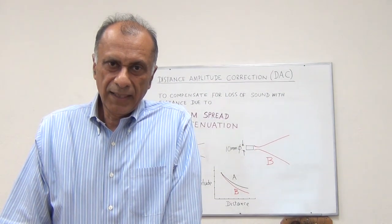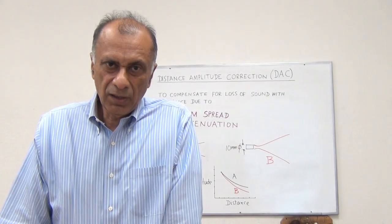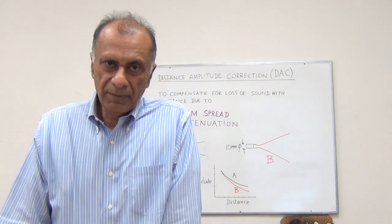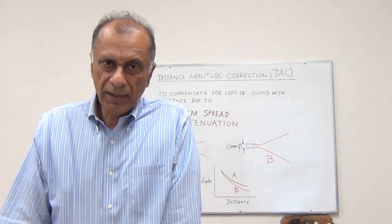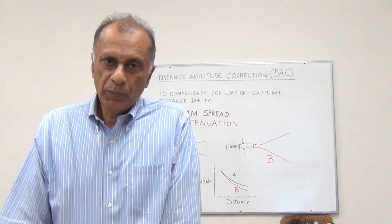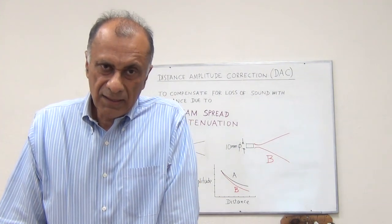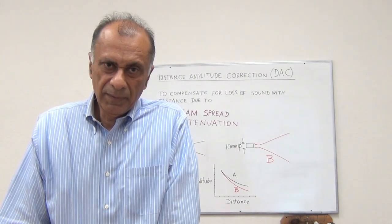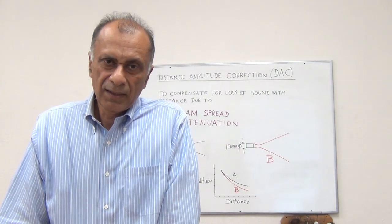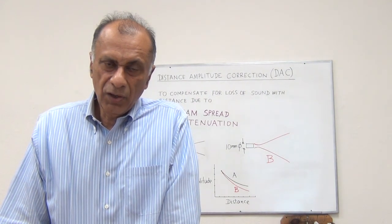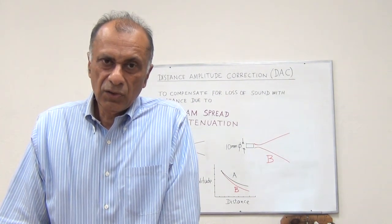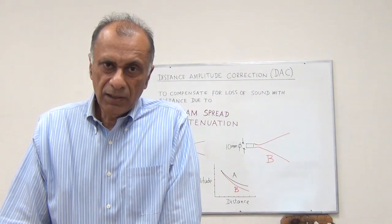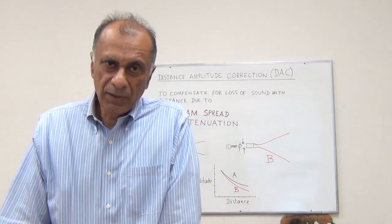In conclusion, DAC curve is used to compensate for loss of sound with distance. We use DAC curve for straight beam inspection and angle beam inspection. The process for angle beam inspection is the same. Instead of flat bottom holes, for angle beam inspections we use side drilled holes or notches. For piping inspection,